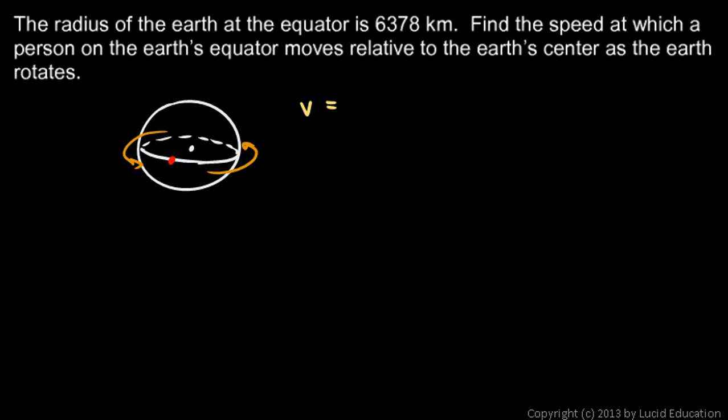We know that velocity is distance over time, and the distance is one lap, and one lap around is 2πr. So that's going to be 2π times this radius, 6,378 kilometers, and the time is 24 hours.